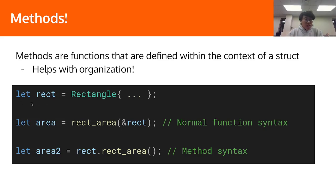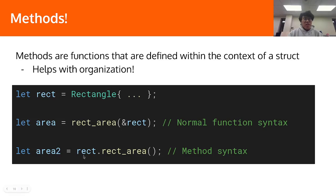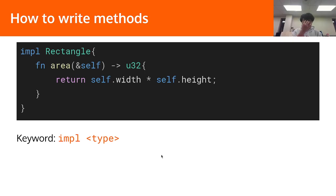For example, here we have an instance of a rectangle called rect. If we use the function we defined earlier, we call rectArea on the specific instance. However, with methods, the syntax is actually like this: we have the rect instance and then use dot notation — rect.area — and this area function would be a method. Now we're going to talk about how we define a method.